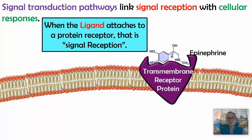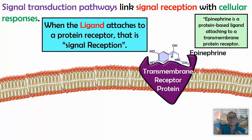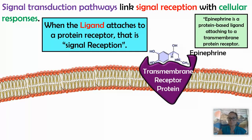After signal reception, that's where signal transduction pathways come into play. We have to relay or pass that message on the inside of the cell. In this example, epinephrine is a protein-based ligand attaching to the transmembrane protein receptor.